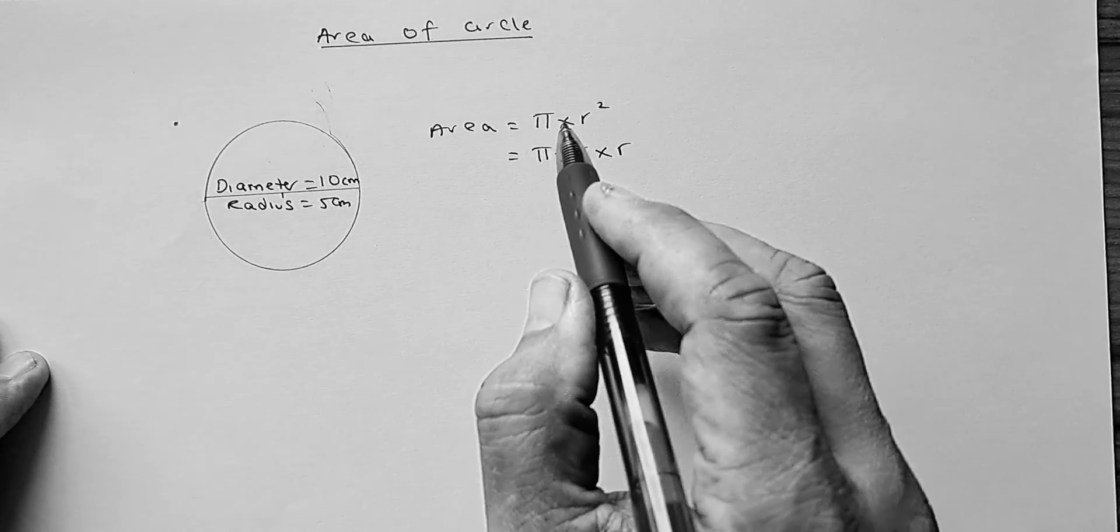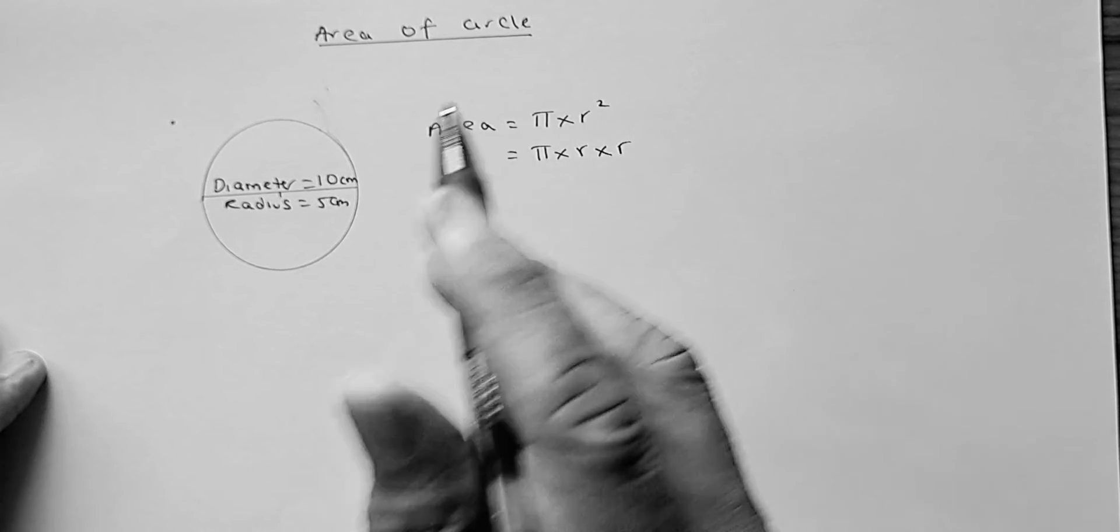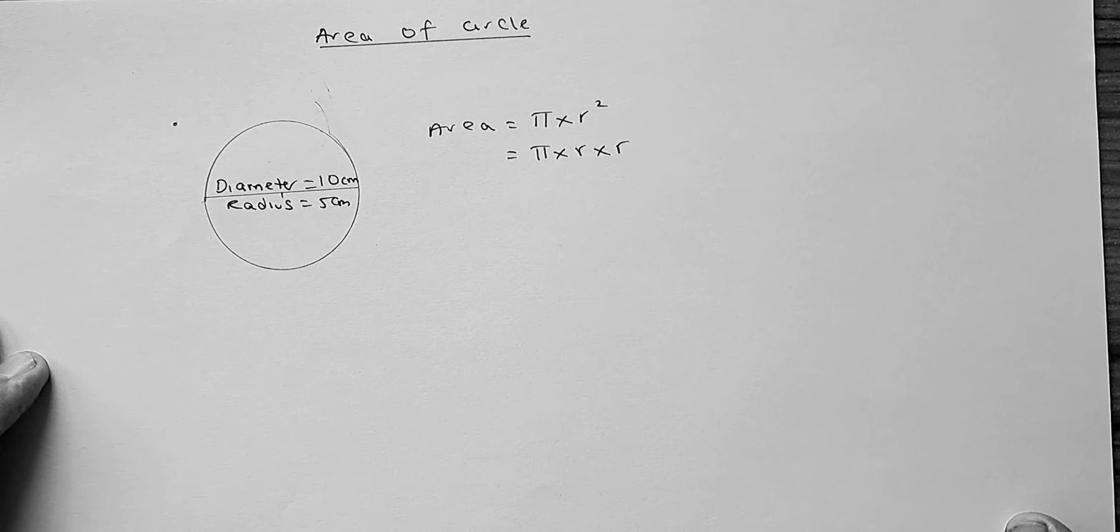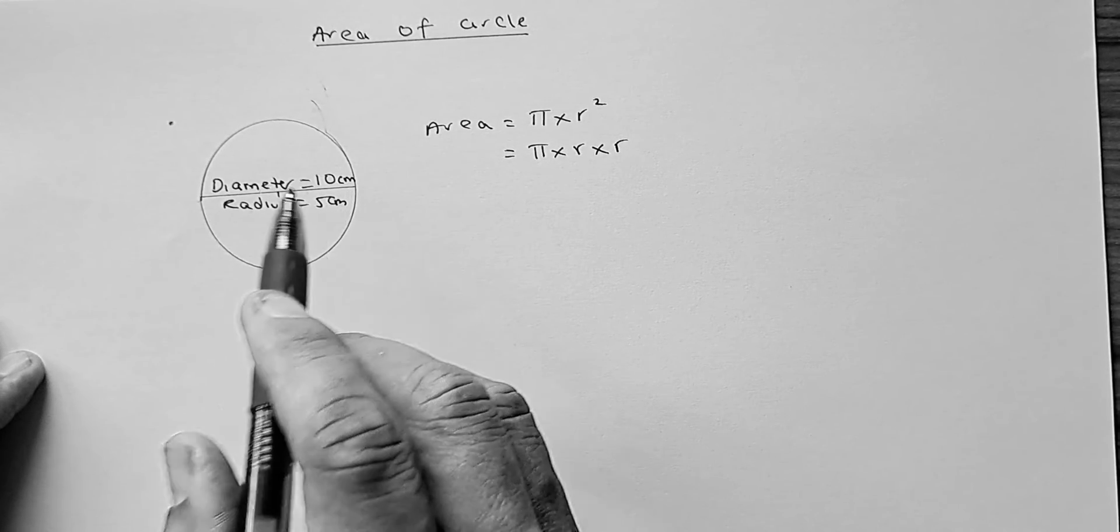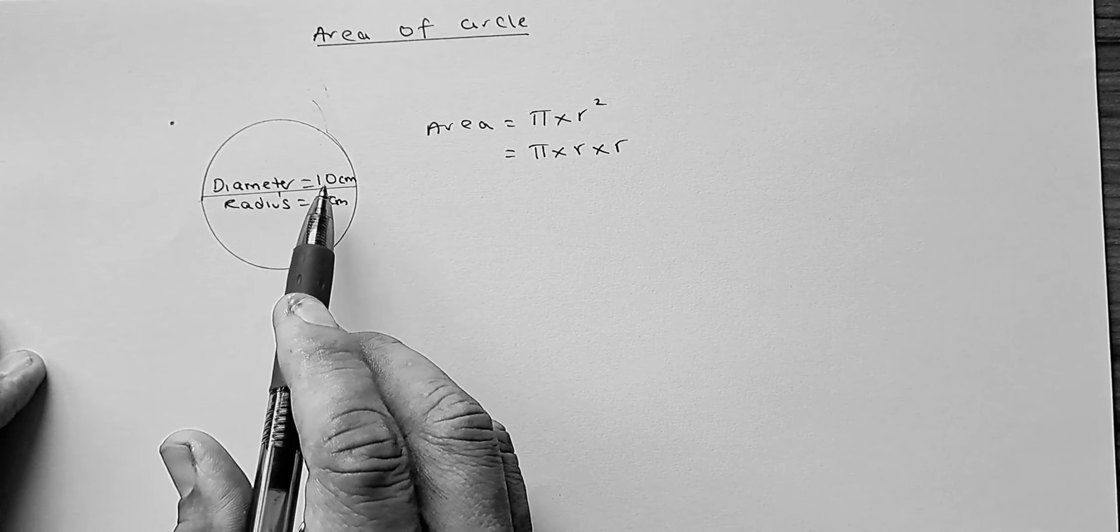The area of a circle is pi times radius times radius or pi r squared. You can't use the diameter to calculate the area of a circle. So, please remember, the area of a circle is pi times radius times radius. So, if a circle is given the diameter is 10 cm, you have to convert the diameter to radius, which is half of the diameter, which is 5 cm.